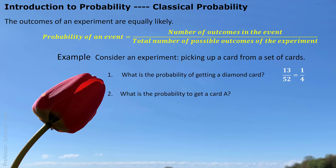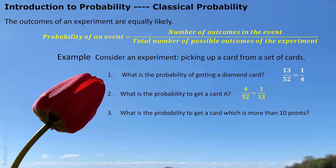The probability of getting an ace: there are 4 aces in the standard set, so the probability is 4 out of 52, which is 1 out of 13. The probability of getting a card with more than 10 points — those are the face cards — gives us 5 out of 52, which is 3 out of 13. The probability of getting a club ace: there is only one club ace, so the probability is 1 over 52.